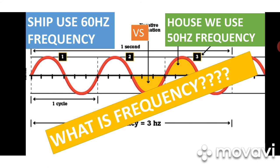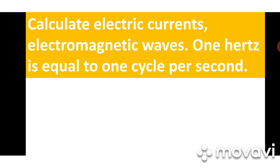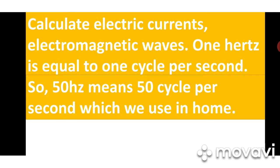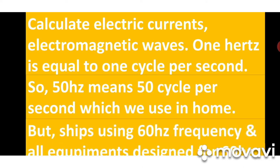In a ship we use 60 Hz frequency; at home we use only 50 Hz. Frequency calculates how many cycles of electric current occur per second — 1 Hz equals 1 cycle per second. So 50 Hz means 50 cycles in one second. For example, a normal bulb in your home — if you film it in slow motion, you can see the bulb switching on and off 50 times in one second. That is 50 Hz. In a ship we use 60 Hz.